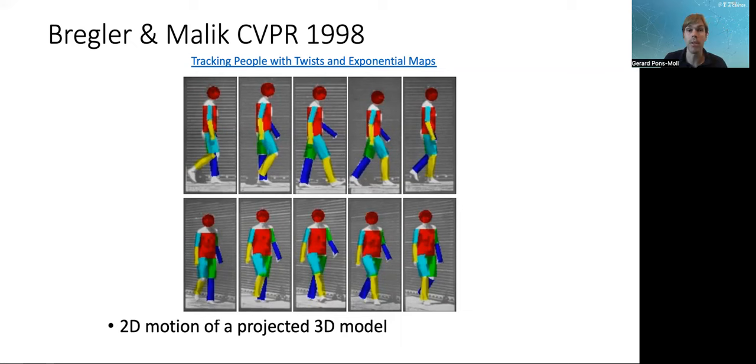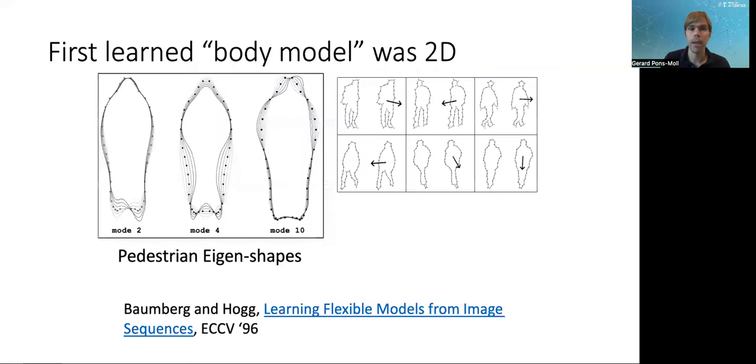But these models were all handcrafted, they were defining these primitives, and they were not learned from data. The first model that actually learned from data was this work by Baumberg and Hogg learning flexible models from image sequences in which they took silhouettes of people, brought them into a canonical pose, and then did PCA on these contours of people to have a model that with PCA could produce different identities.